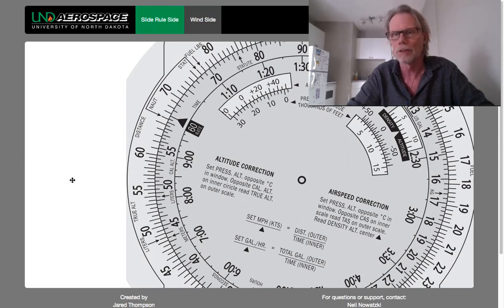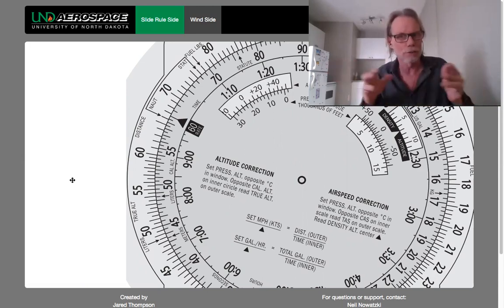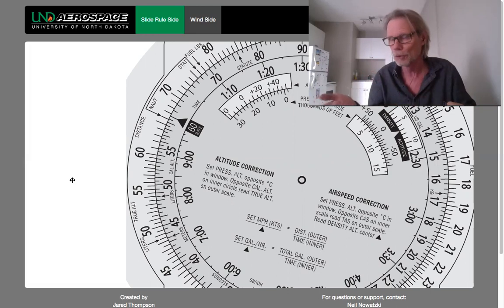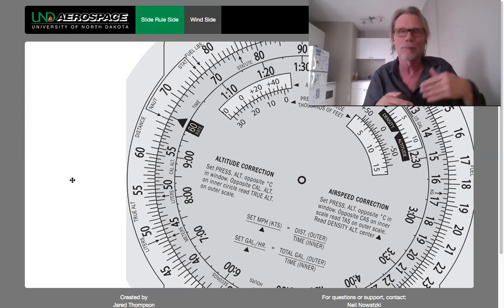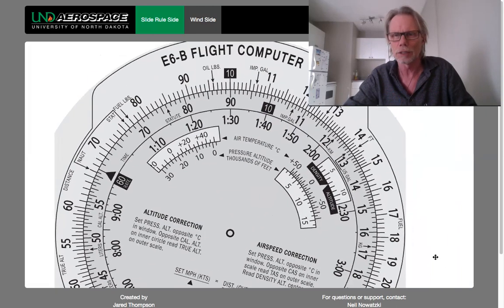So as you can see you can work with large figures or with small figures and you can find the fuel burn by knowing the time and the amount of fuel, or you can find the amount of time if you know the fuel burn and the amount of fuel, or you can find the amount of fuel burn if you have the time and the fuel burn. These are all part of this equation and the E6B very easily helps you work that out.